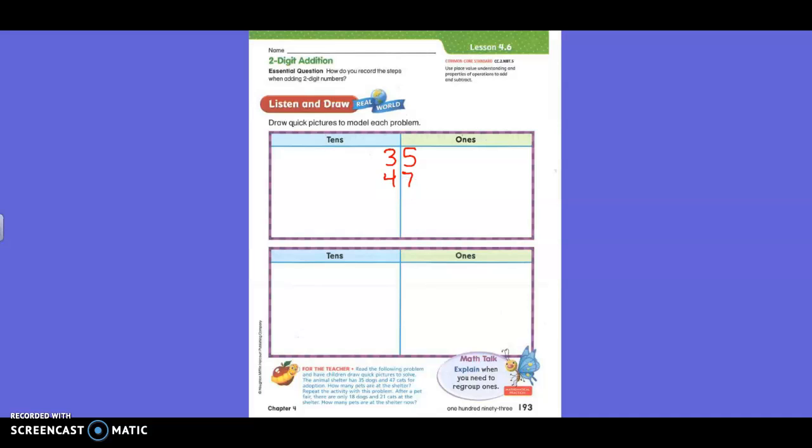Write it below the 35. The question says how many pets are at the shelter, so let's find this out. Are we adding? Yes, you're adding. What do we add first, Isaac? So I'm adding seven plus five. Everybody know that answer? Vander? Twelve.